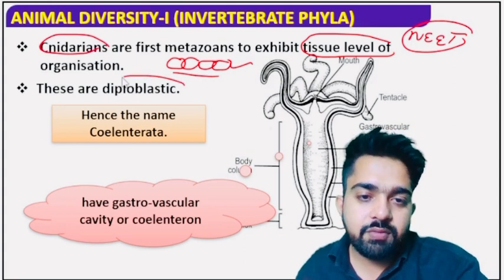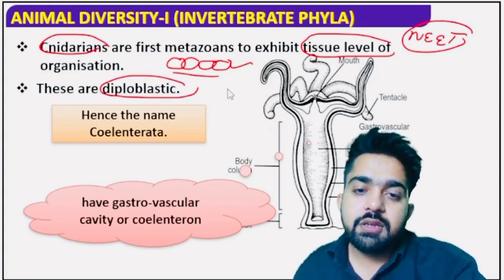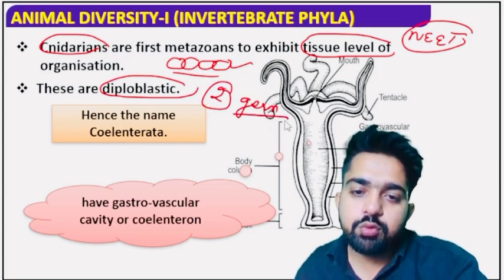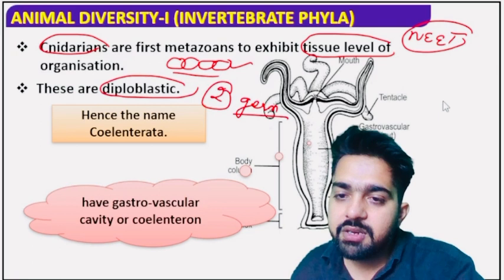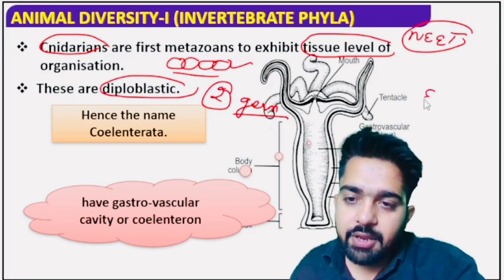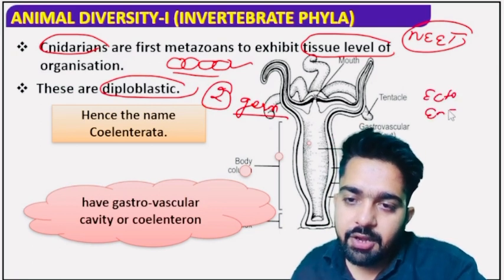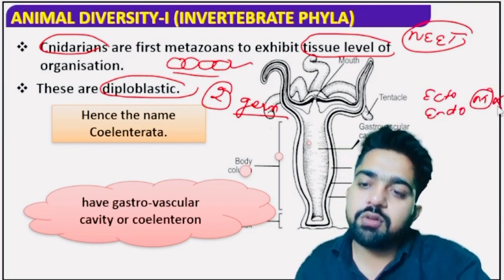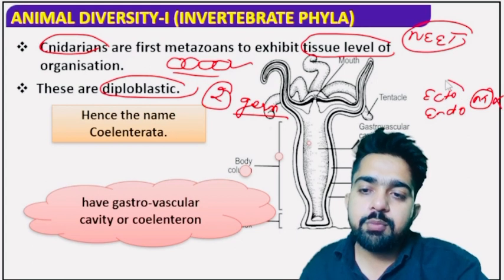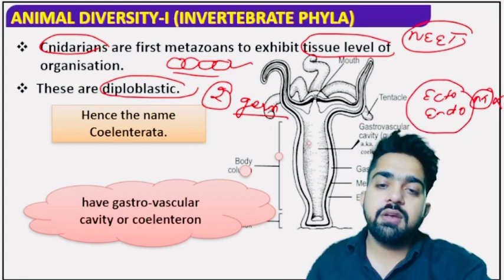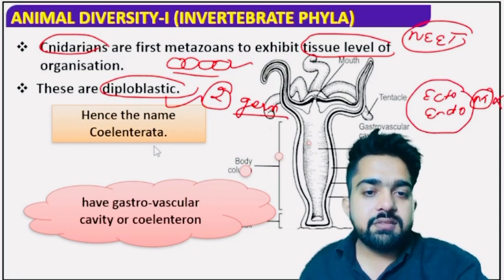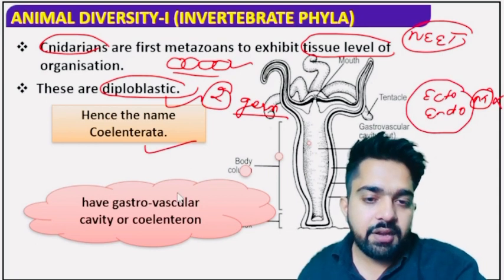They are diploblastic. What do you mean by diploblastic? They are formed of two germ layers — ectoderm and endoderm. That means there is no presence of mesoderm. Due to the presence of two germ layers, they are considered diploblastic animals. Hence they are considered as Coelenterata.